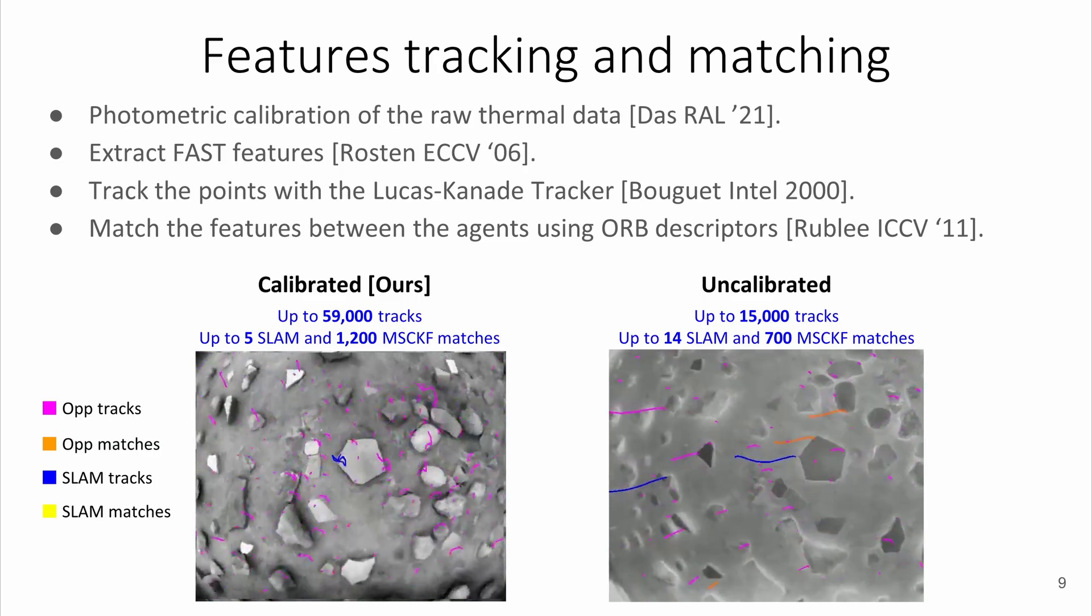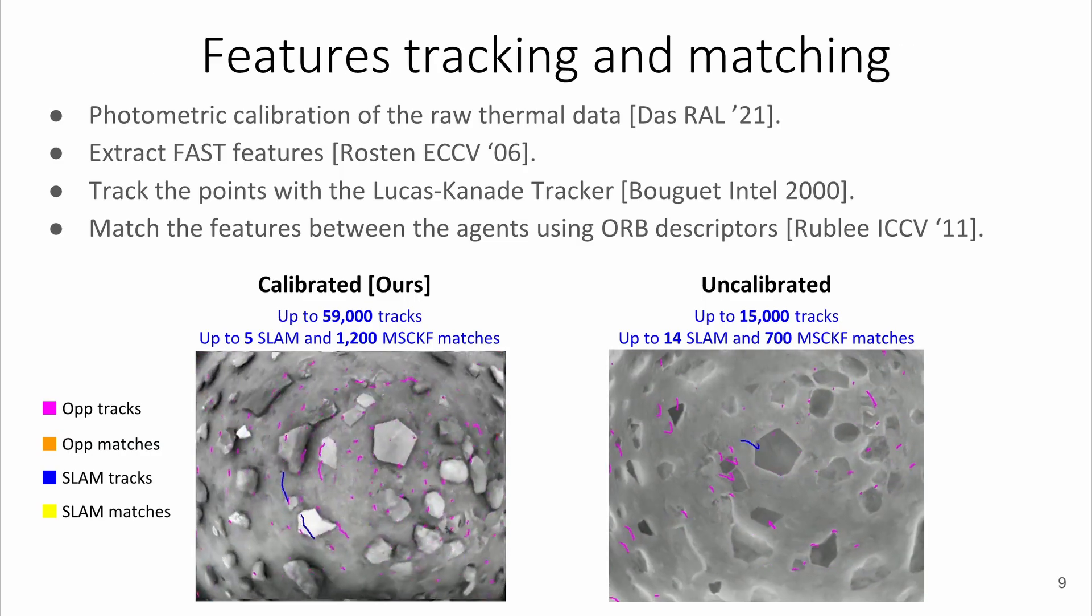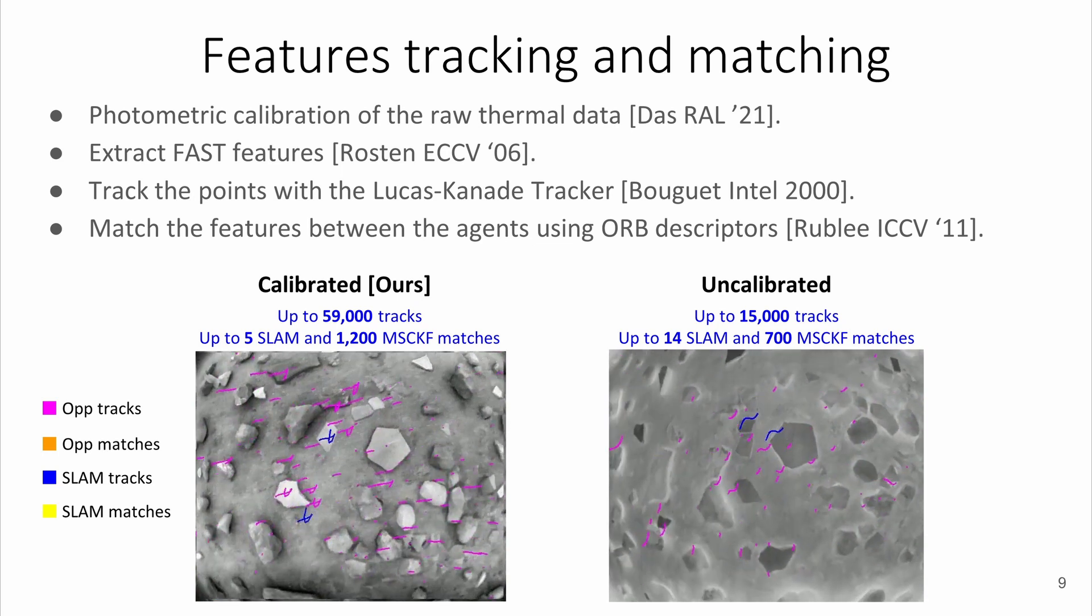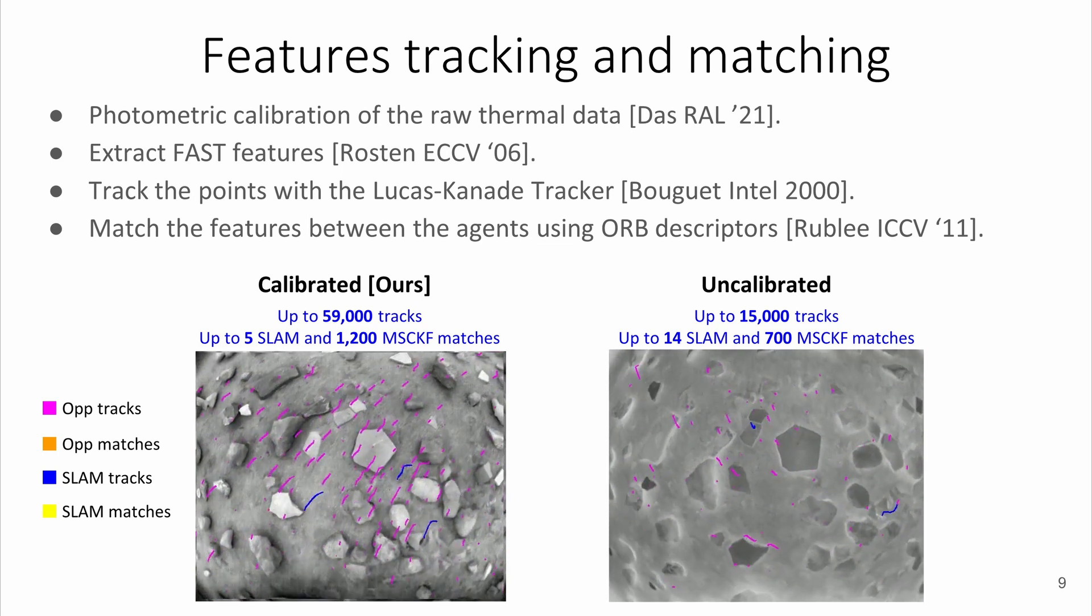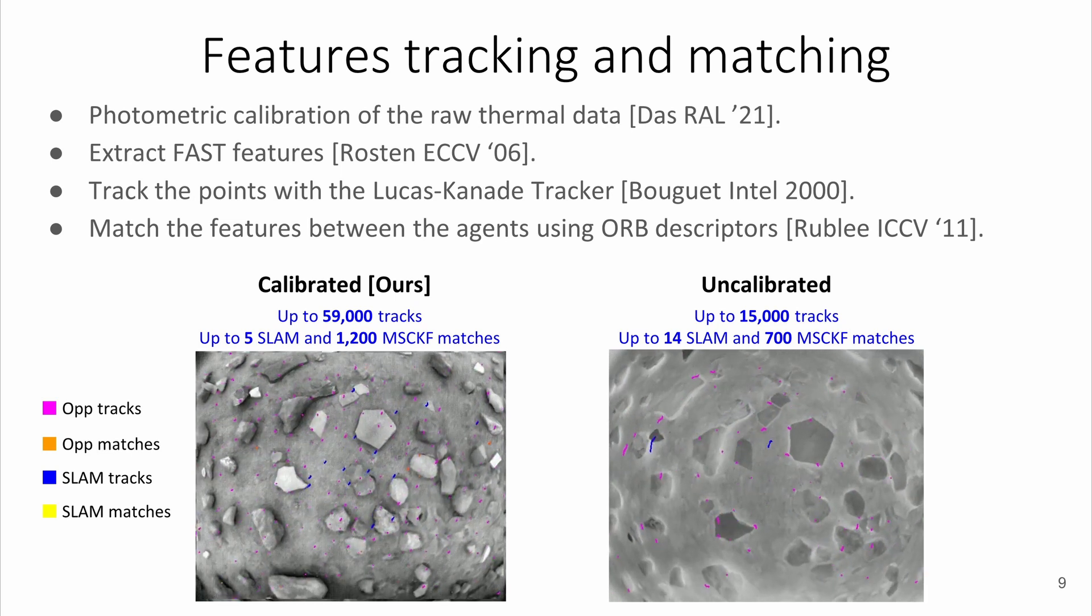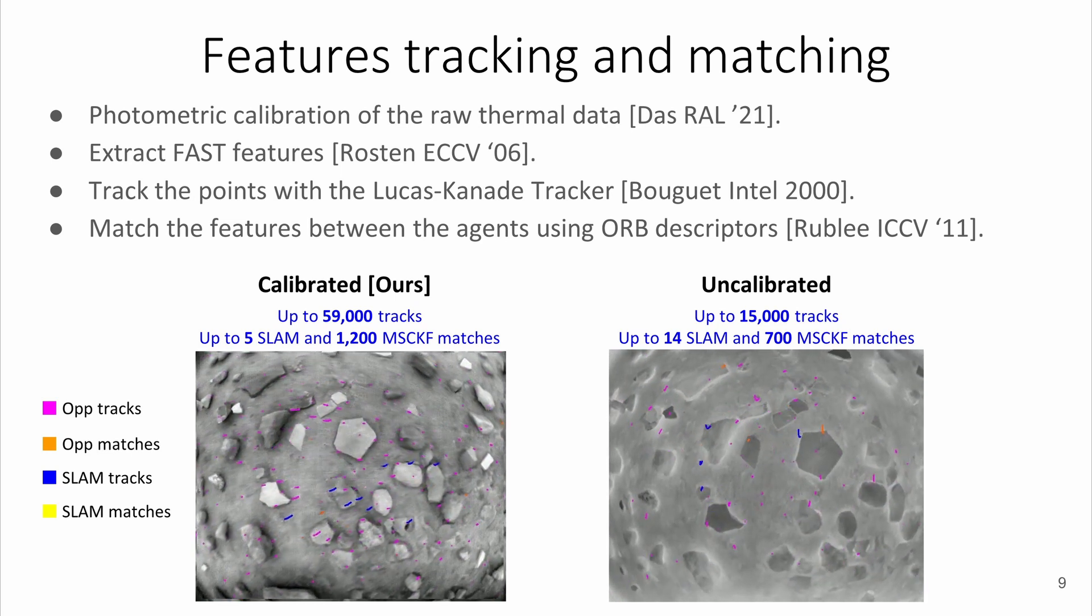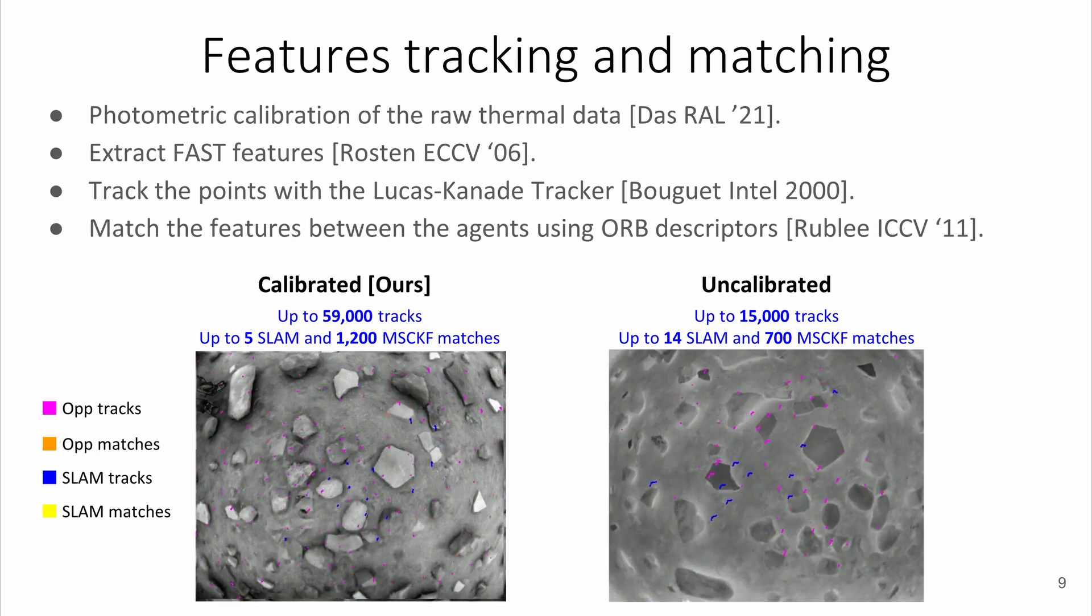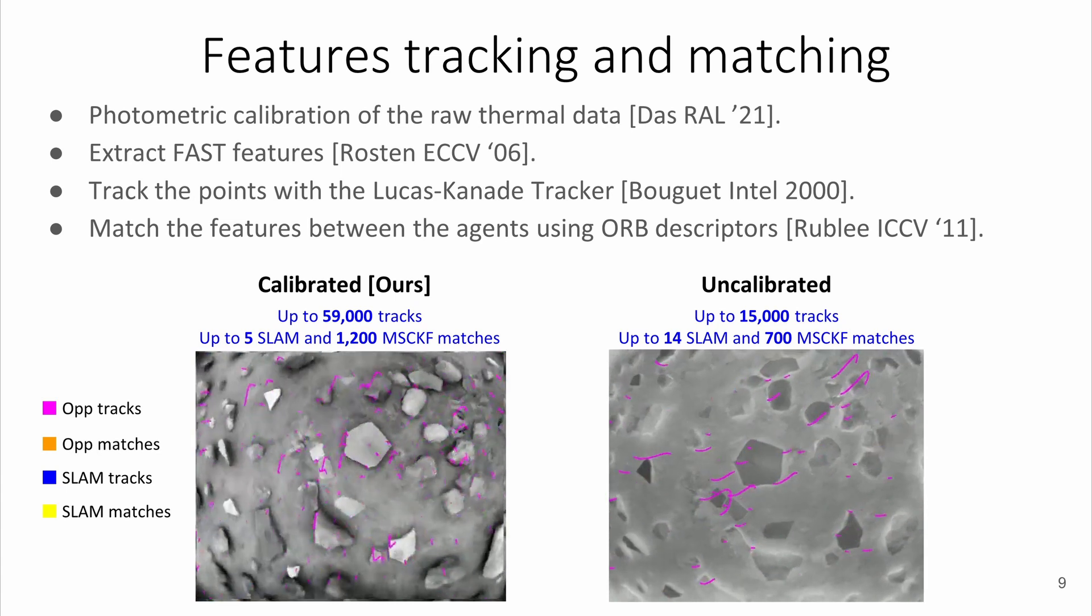We use an online photometric calibration algorithm to attenuate the disturbances and artifacts that thermal images are affected by. With this approach, we are capable of getting four times more tracks than in the raw thermal imagery, and the feature matching is almost doubled. As a result, more collaborative updates between the UAVs can be performed.